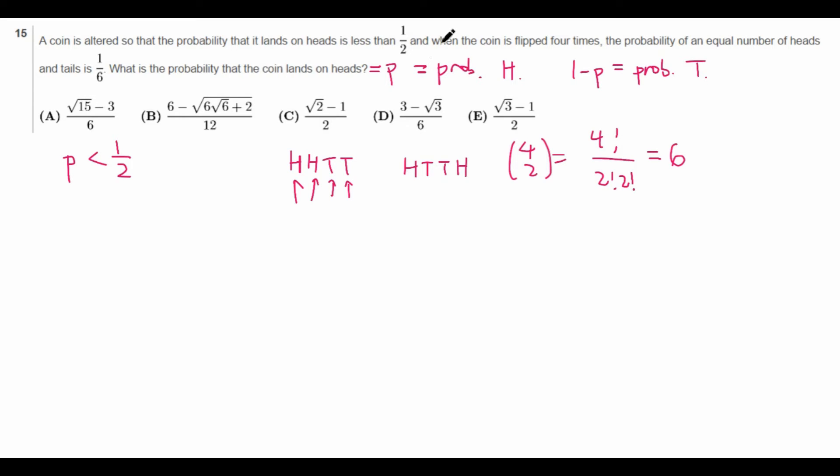Another way you can think about it is, maybe you first order all the letters in 24 ways, which is 4 factorial. But then you over-counted some of them. For example, if you switch these two heads, then it's still the same ordering, so we have to divide by 2. But then it's the same thing for here. If we switch these two tails, it's also the same ordering, so we have to divide by 2 again.